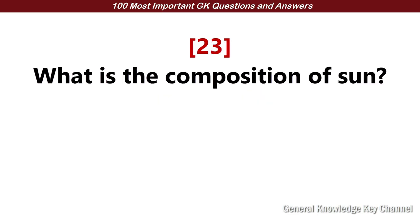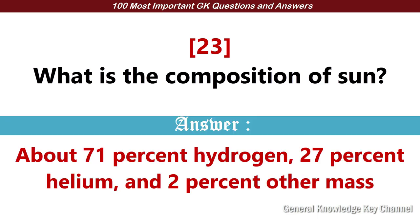What is the composition of the sun? About 71% hydrogen, 27% helium, and 2% other mass.